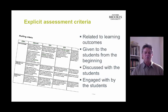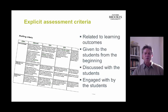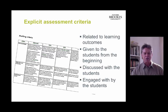Colleagues here at Brooks — Chris Rust, Margaret Price, and Barry O'Donovan in particular — researched the impact of a large-scale implementation of explicit assessment criteria in the Business School at Brooks over three or four years in the early 2000s. They found that although students appreciated knowing the assessment criteria, there was no significant improvement in student achievement as a result. If you think about it, this makes sense.